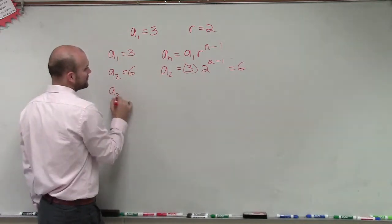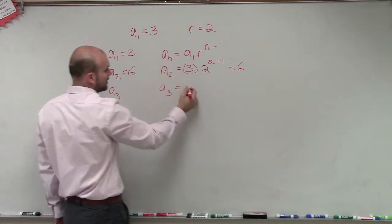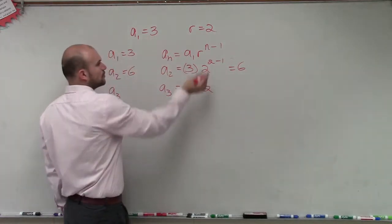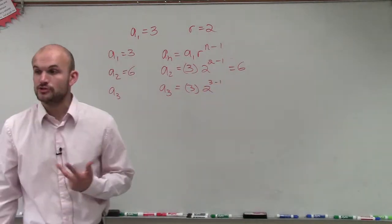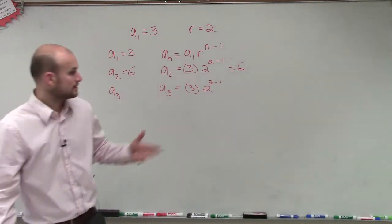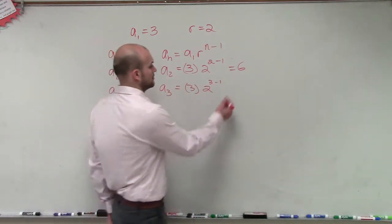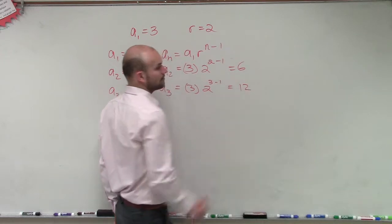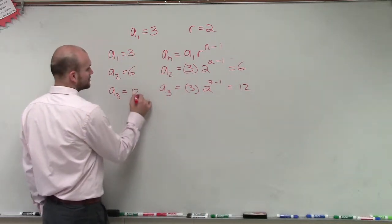Next, a_3 equals a_1 times 2 raised to the 3 minus 1. Now 3 minus 1 gives me 2 squared. 2 squared is 4, so 4 times 3 is 12. Therefore, a_3 equals 12.